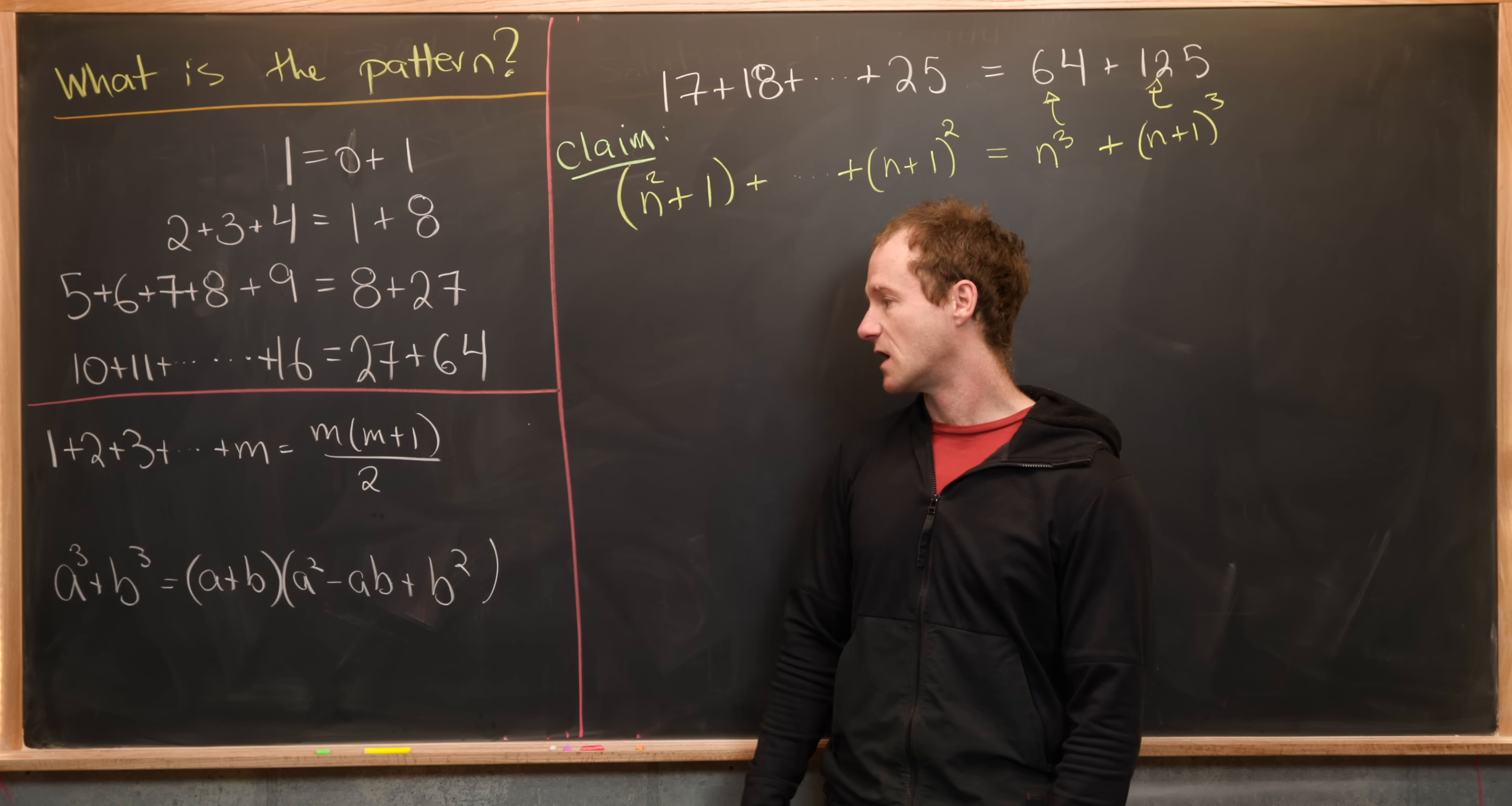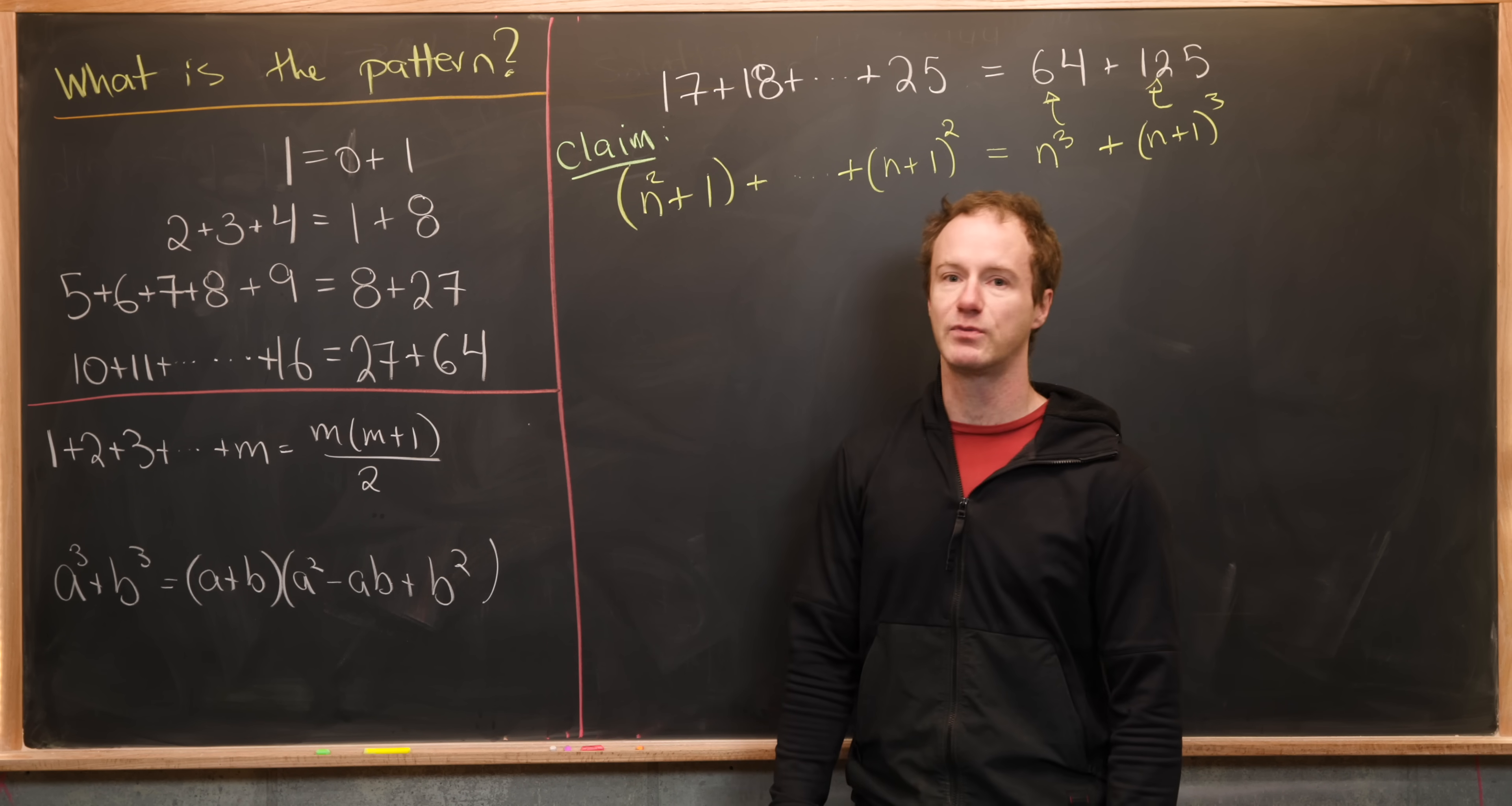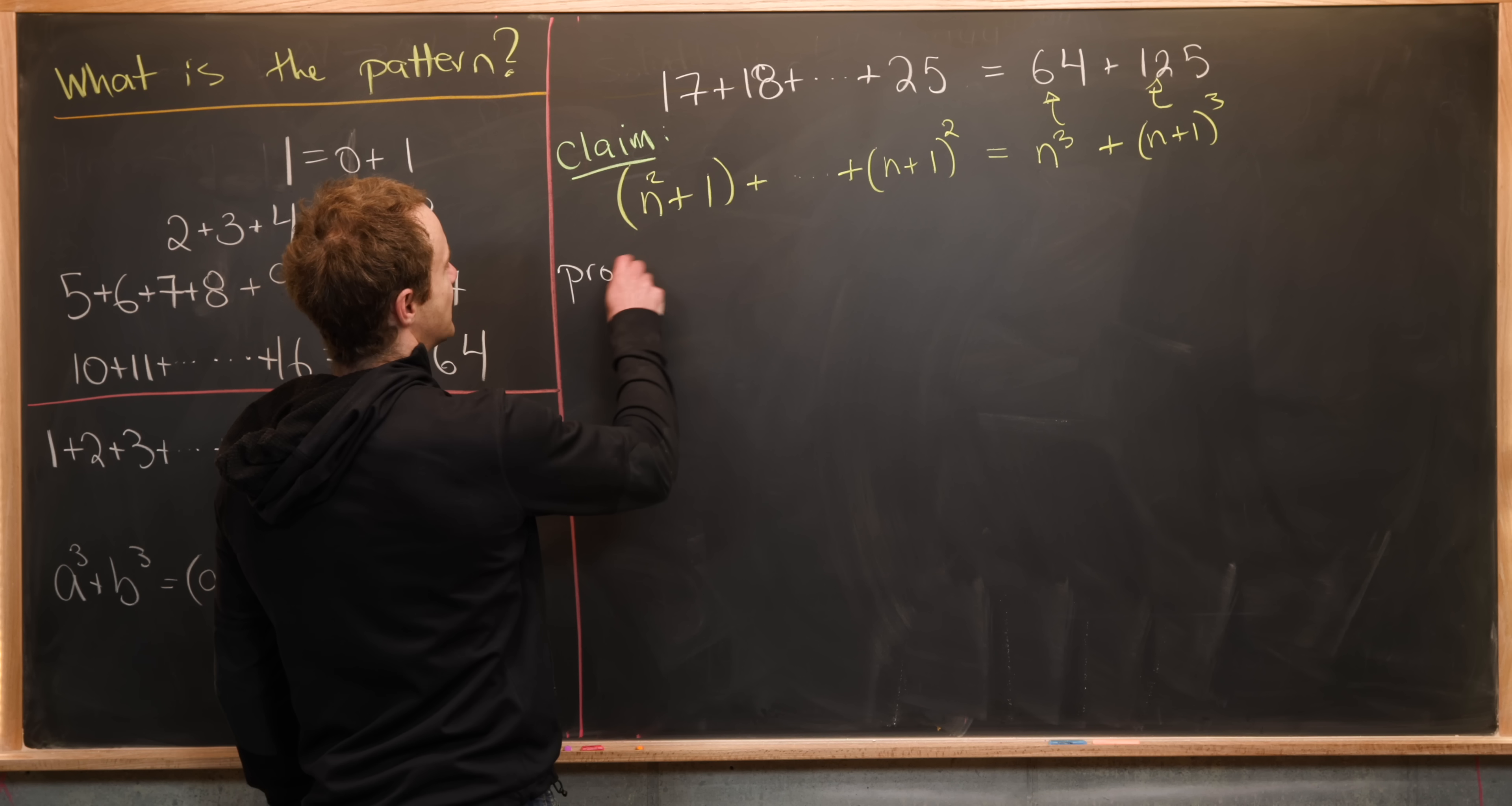Next is the sum of cubes identity. So a cubed plus b cubed is equal to a plus b times a squared minus ab plus b squared. So we'll use each of these identities as we're working through the proof of this claim. So let's maybe do the proof of this claim now.